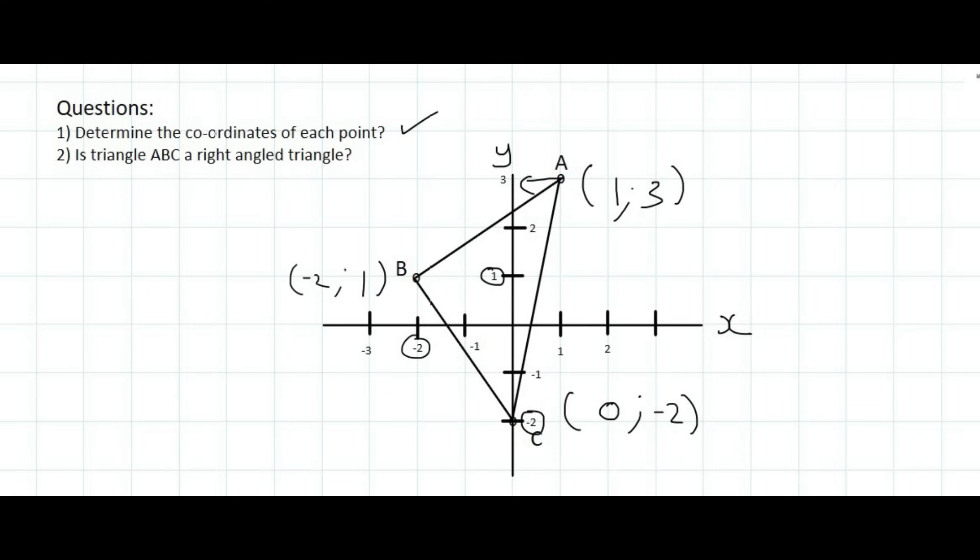Question 2 says, is triangle ABC a right angled triangle? Meaning, does it have a 90 degree angle? Now, what does 90 degrees make you think of? Anything that we've done in the previous section, or in the previous videos in this section?